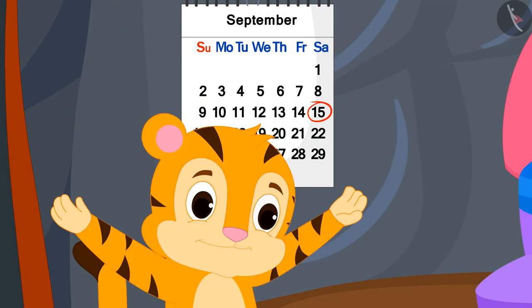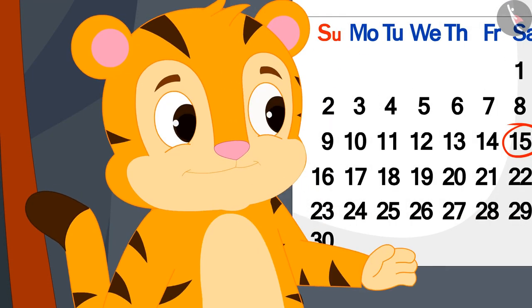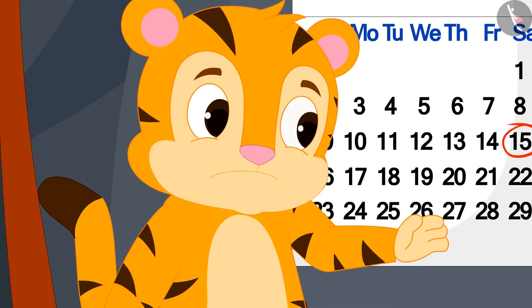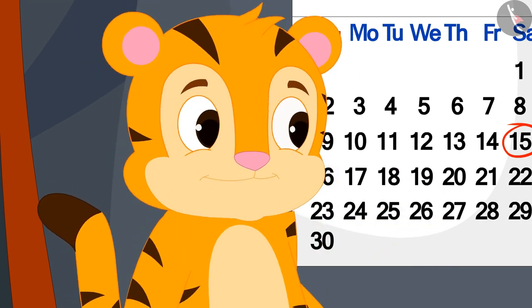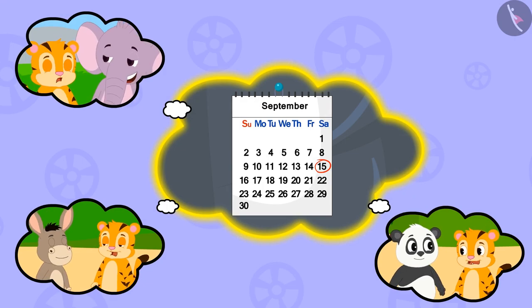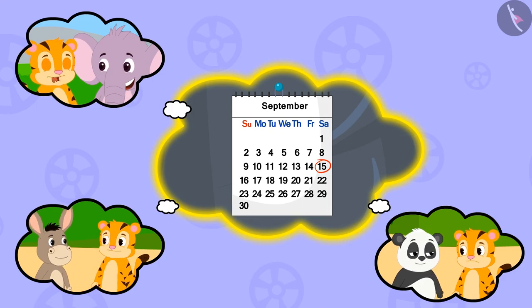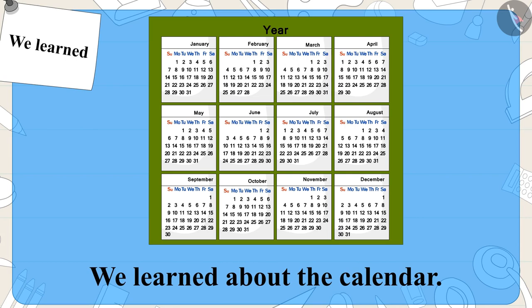Sher Khan was very happy after learning about the calendar. He told his mother that now he himself will find the right day for the magic show. He went running and told his friends about the calendar. Children, in this video we learned about the calendar. In the next video, we will learn more about it with some interesting examples.